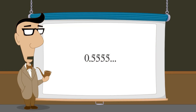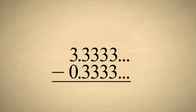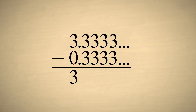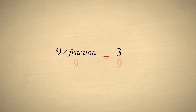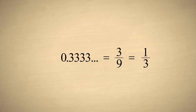Let's try this again with a repeating sequence of threes. As we did in the previous example, we eliminate the one repeating digit by multiplying by ten one time and then subtracting the original number. This eliminates all the repeating threes to the right of the decimal point. So ten times the fraction minus the fraction equals three. We write this as an equation which we can simplify to say nine times the fraction equals three. We then divide each side by nine so that the nines on the left side cancel. This equation tells us that our fraction is equal to three-ninths, which can be reduced to one-third.